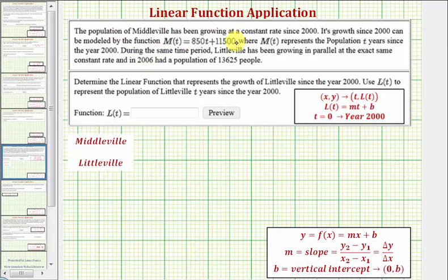The population of Middleville has been growing at a constant rate since the year 2000. Its growth since the year 2000 can be modeled using the linear function m(t) = 850t + 11,500, where m(t) represents the population t years since the year 2000. During the same time period, Littleville has been growing in parallel at the exact same constant rate and in 2006 had a population of 13,625.